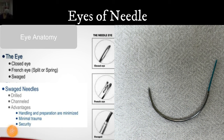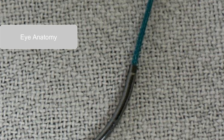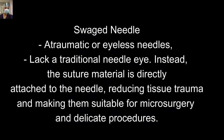For historical context, there are different types of needle eyes: closed eye, French eye, and swaged end. For all practical purposes in the present era, you will use only the swaged end, where the thread is embedded inside the shaft of the needle body. The swaged end is narrower compared to the body of the needle. If we use an open eye, the thread end would be broader and cause more tissue trauma. Swaged needles are atraumatic and eyeless — the suture material is directly attached to the needle, reducing tissue trauma and making them suitable for microsurgery and delicate procedures.